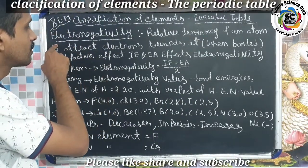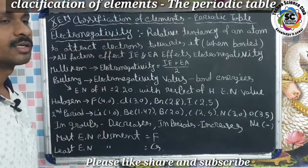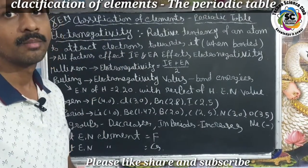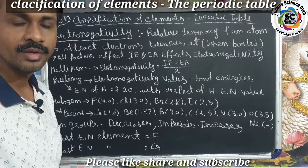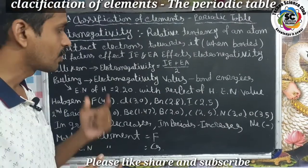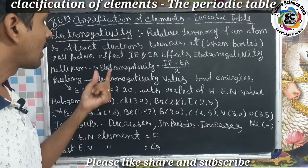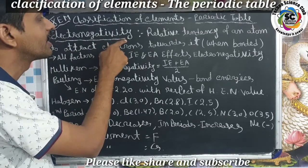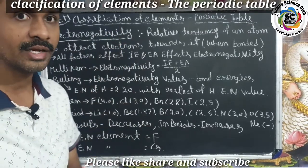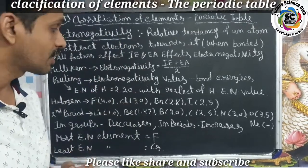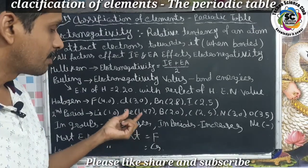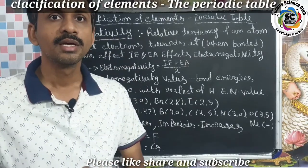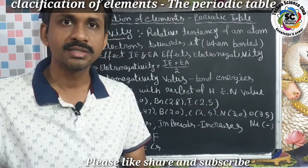The next topic is electronegativity. In the properties of elements there are six types of properties: valency, atomic radius, electron affinity, ionization energy, and electronegativity. In this video we learn about what is electronegativity and how it behaves in groups and periods.